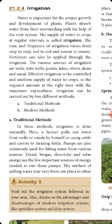Fertilizers can also be applied through irrigation. The various sources of irrigation are wells, tube wells, ponds, lakes, rivers, dams, and canals. These are the water irrigation sources.